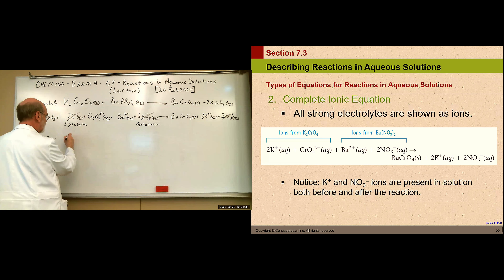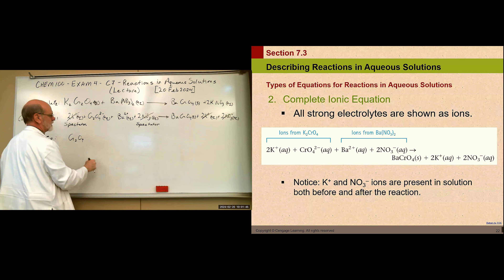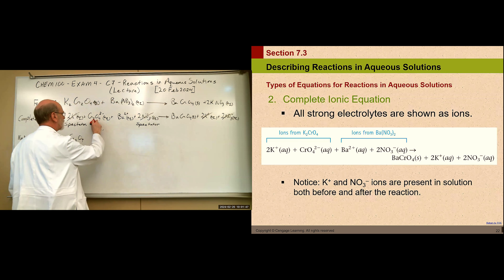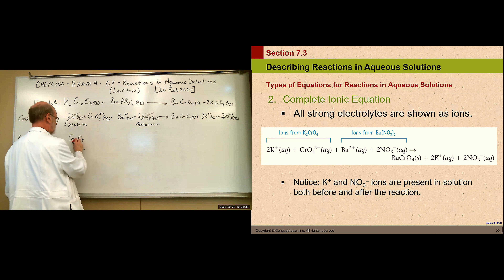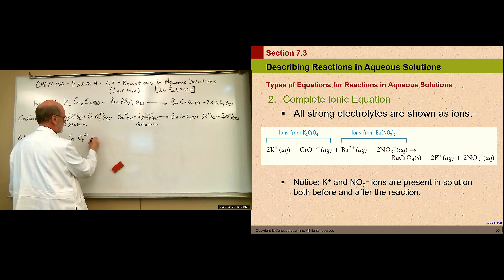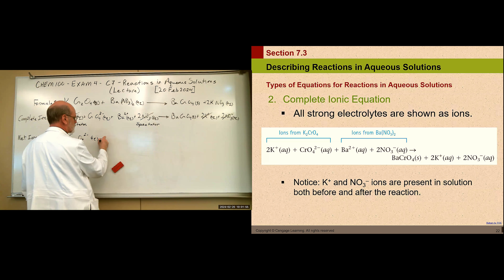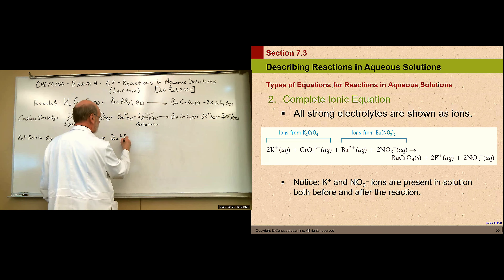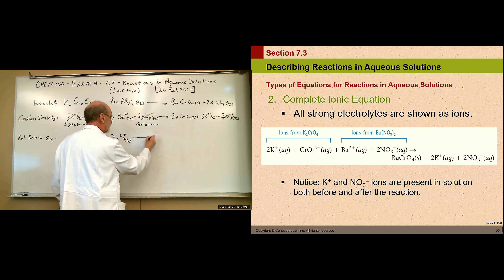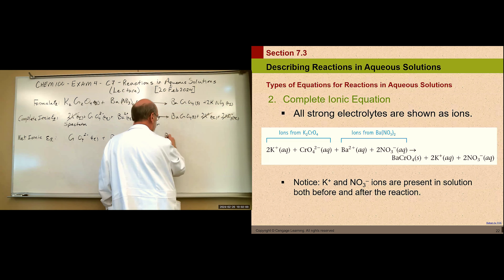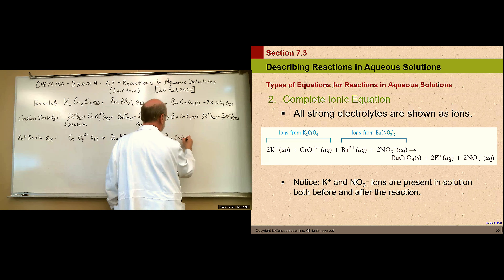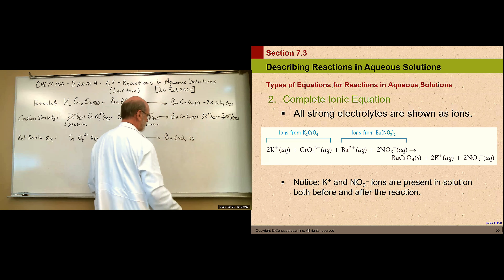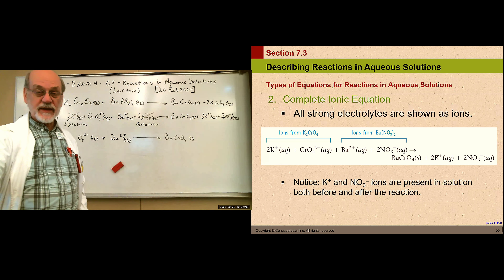After canceling the spectator ions — potassium and nitrate — from both sides of the complete ionic equation, we get the net ionic equation: Ba²⁺(aq) + CrO₄²⁻(aq) → BaCrO₄(s). This shows only the species that actually drive the reaction.